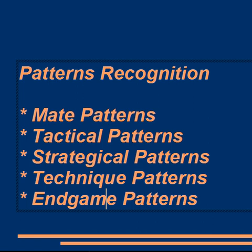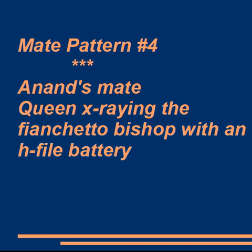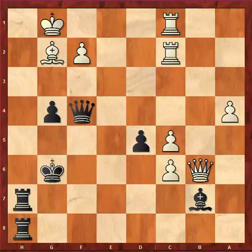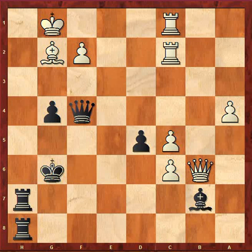Let's see what we have in store for this video. That's mate pattern number 4, which I choose to call Anand's Mate. It consists of a queen x-raying a phi inside a bishop in conjunction with an h-file battery. I chose to call this Anand's Mate because this position occurred probably less than a week ago in a game between Vladimir Kramnik with white and Anand with black.